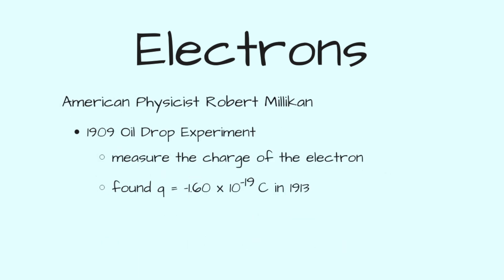In 1909, American physicist Robert Millikan did his oil drop experiment. This experiment allowed him to measure the charge of the electron, and after improvements, he later found in 1913 that the charge of the electron is minus 1.60 times 10 to the minus 19 coulombs.